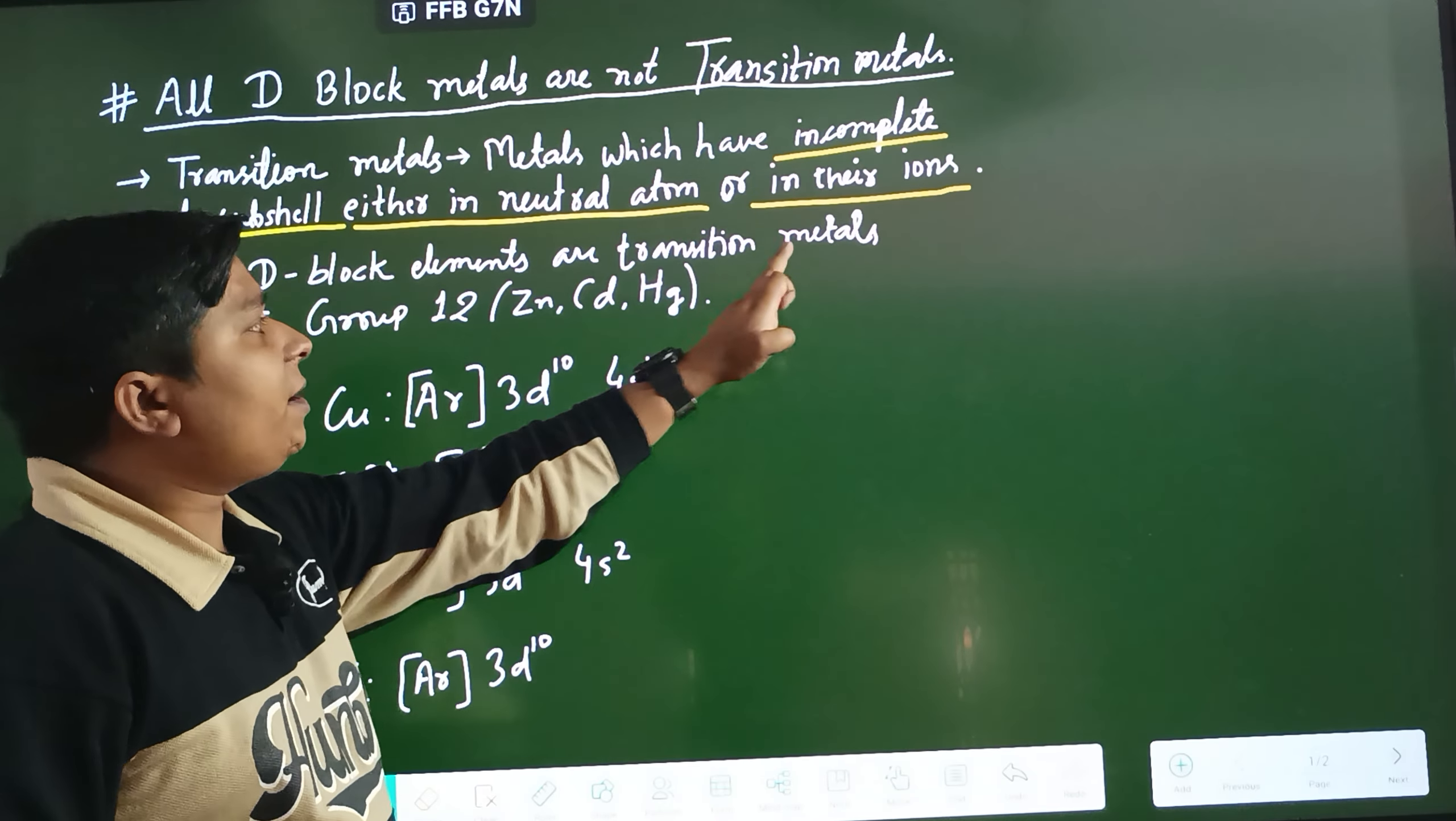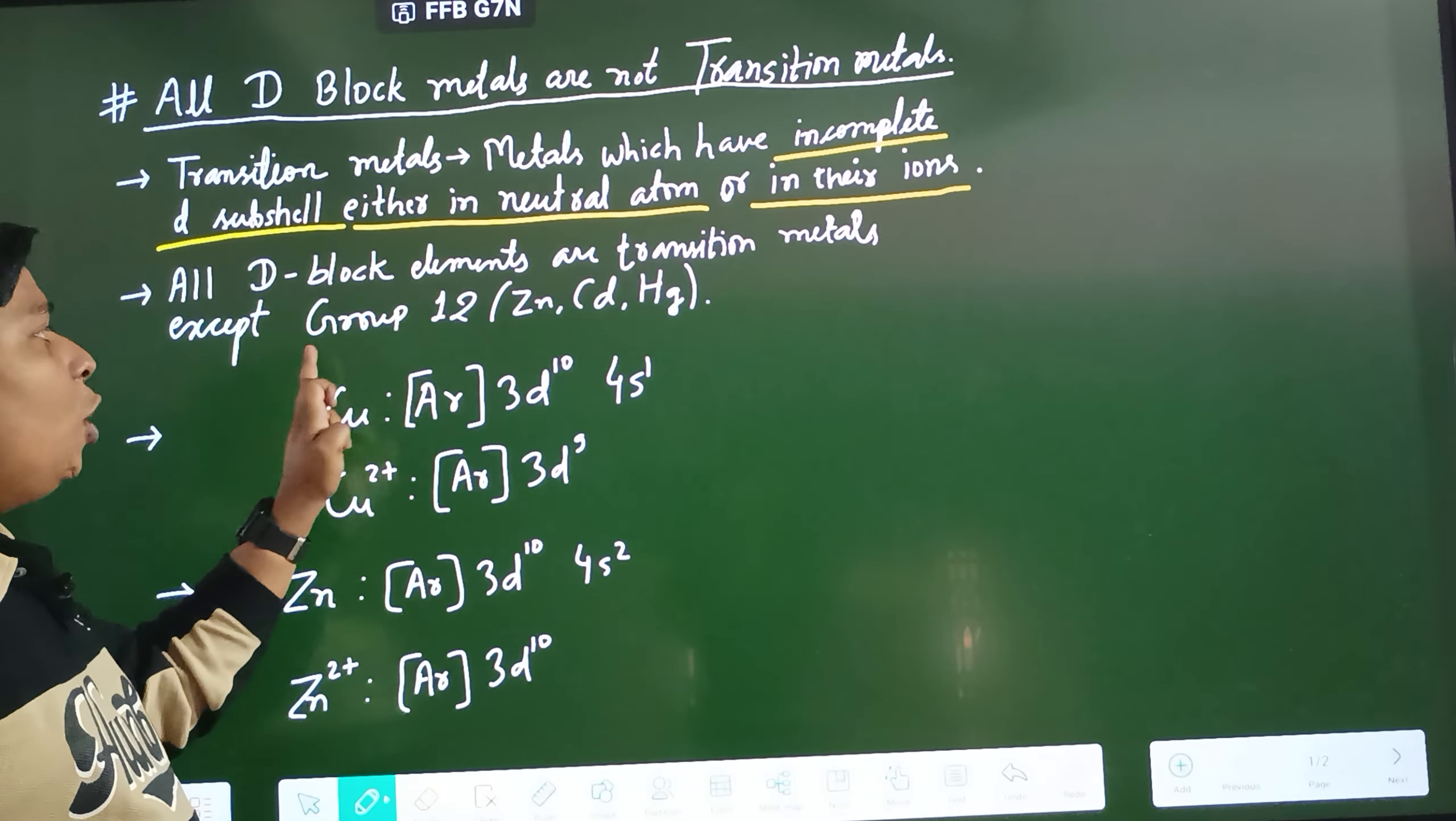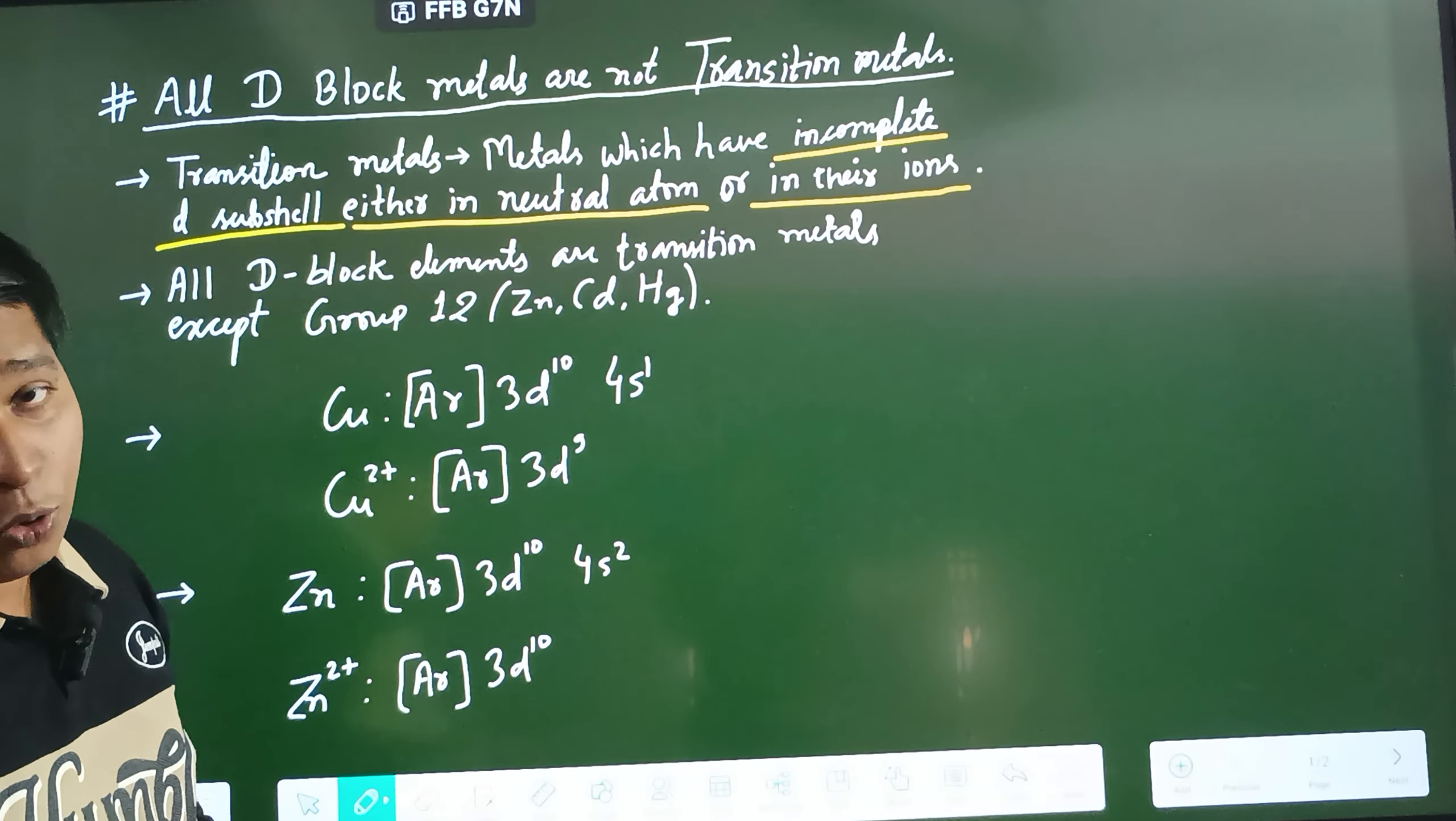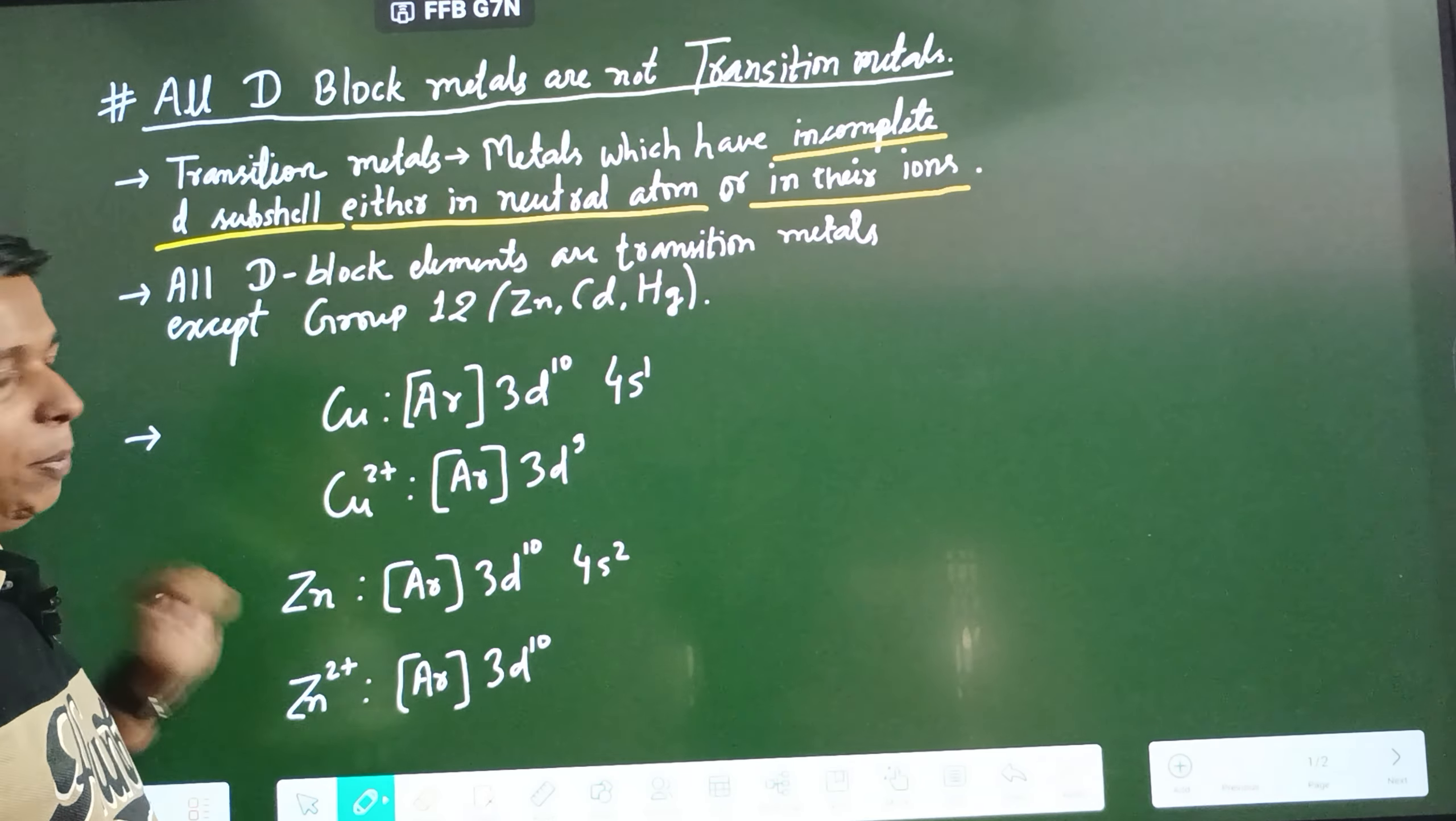All D-block elements are transition metals except group 12. Why is it so? Let's see. For example, we pick copper.